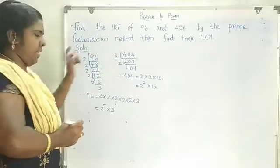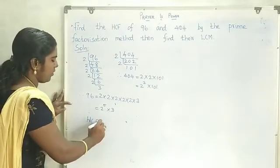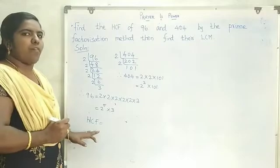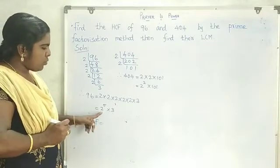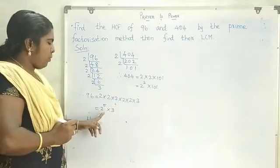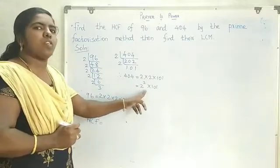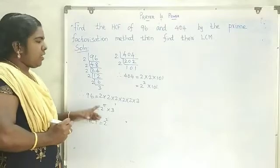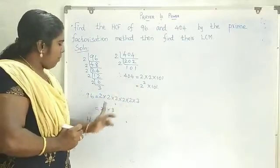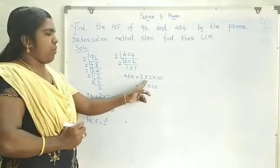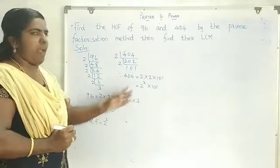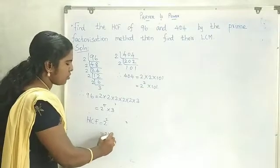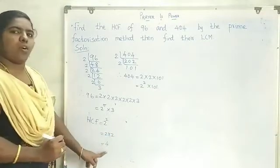Now we find the HCF. HCF means the product of the smallest power of each common prime factor. We have 2 to the power 5 from 96 and 2 squared from 404. Since 2 squared is the smallest power, and there is no other common factor, therefore HCF = 2 squared = 2 × 2 = 4.